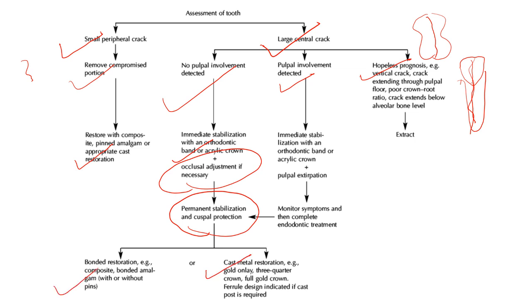If the pulp is involved: perform immediate stabilization, pulpal extirpation (root canal treatment), monitor for symptoms, complete endodontic treatment, then give permanent stabilization and a bonded or cast metal restoration. This is the complete treatment chart for crack tooth syndrome.